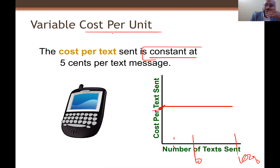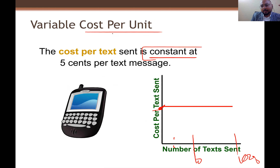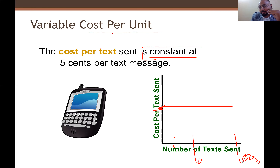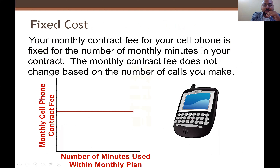So to summarize: on a total basis, variable cost behavior is that as quantity increases, cost increases. But when you convert variable cost into per unit, the per unit cost remains the same — we cannot call it fixed, but it does remain constant. Now let's look at the behavior of fixed cost.